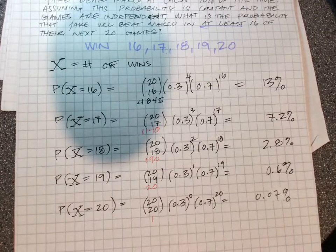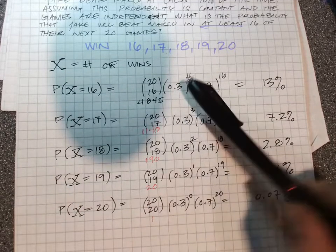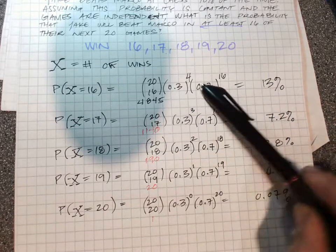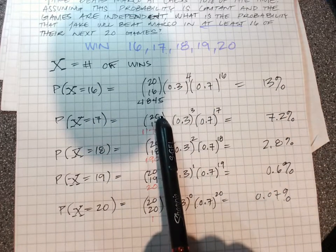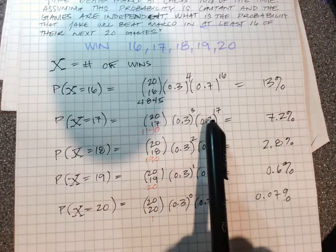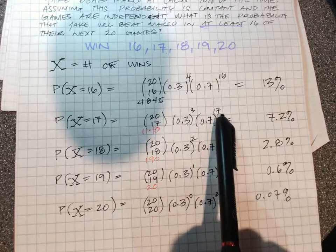Okay, so I ran out of time on the last video, hit my five minute limit. In the meantime, I calculated the rest of these. Probability X is 17, so you got 20 games, 17 wins.